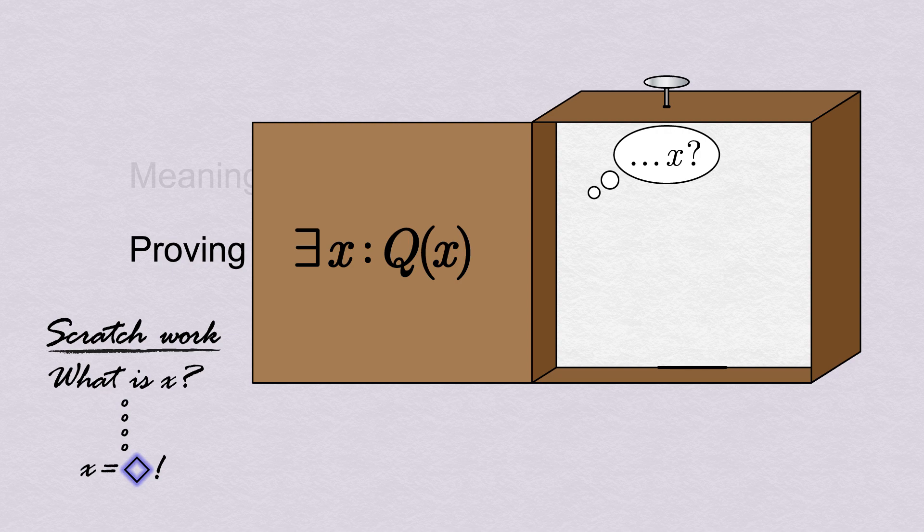Note that the value of x is our choice in the proof, unlike the first step in the proof of a for all statement. We get to choose the x inside the box, and outside the box the user simply has to accept it.